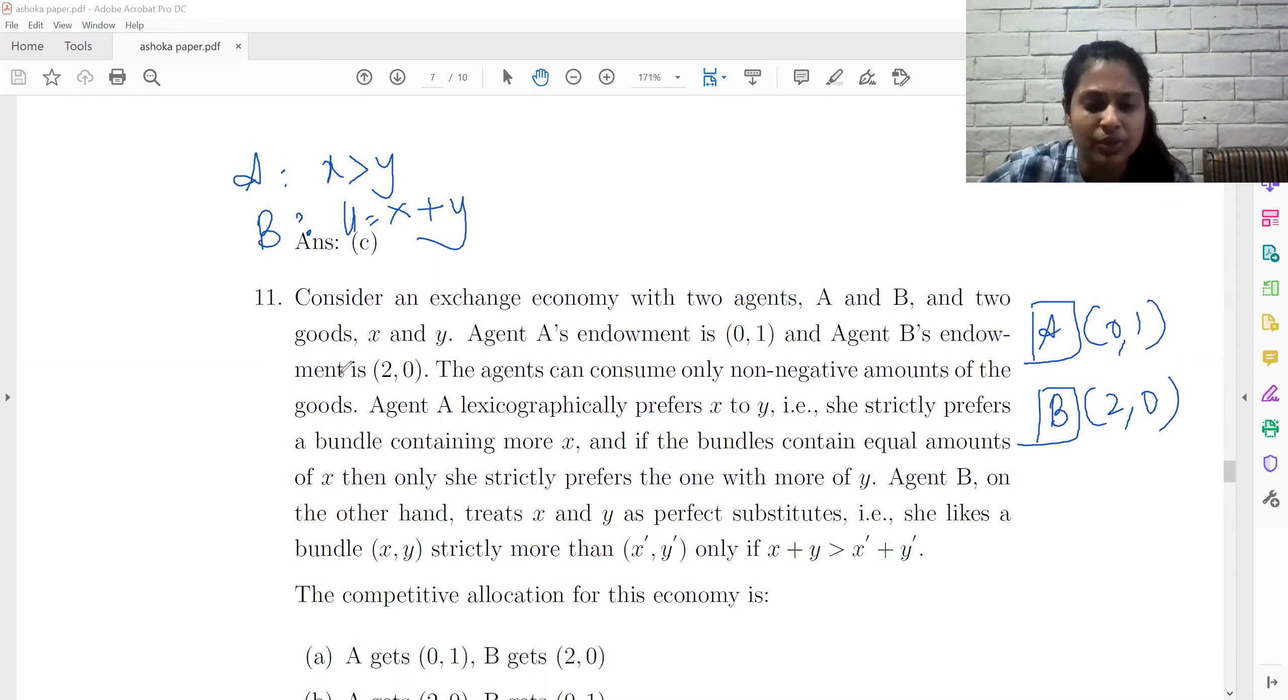Now we have to find the competitive equilibrium. To find the competitive equilibrium, we need the price ratio. So we have 5 cases. PX equal to 0. PY equal to 0. PX more than PY. PY more than PX.